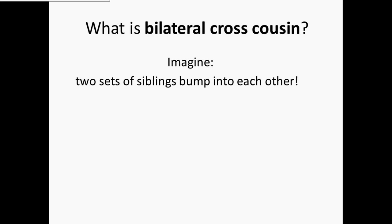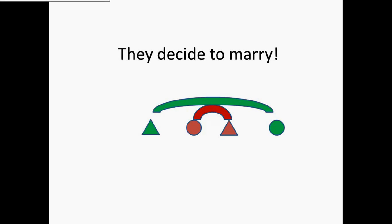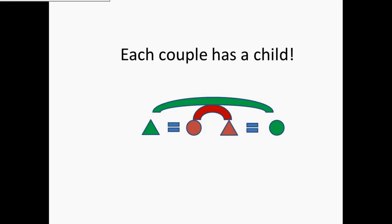We're going to do a thought experiment. Imagine that two sets of siblings are out wandering around in the desert and they manage to bump into one another. We have a brother and a sister who we'll call green brother and sister, and a second pair of siblings — red brother and sister. They bump into each other, having been wandering a long time, so they decide to immediately get married. Green man marries red woman, and red man marries green woman. Each of these couples has a child, and this is where we can start to understand the meaning of a bilateral cross cousin.